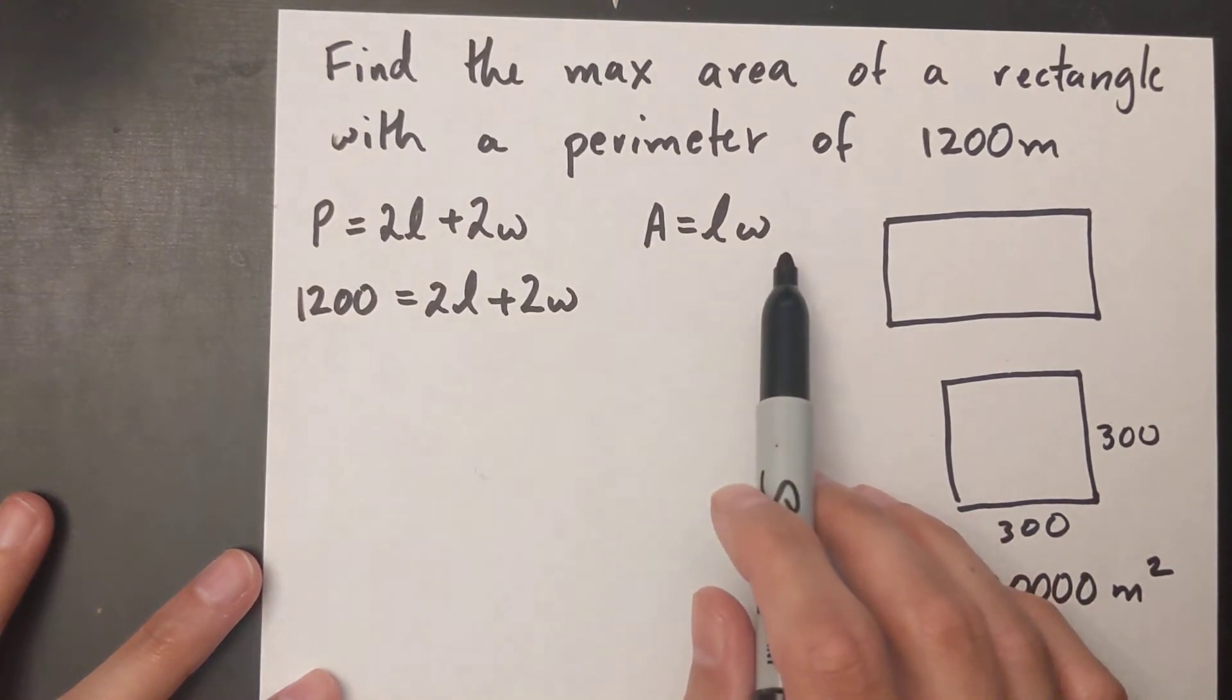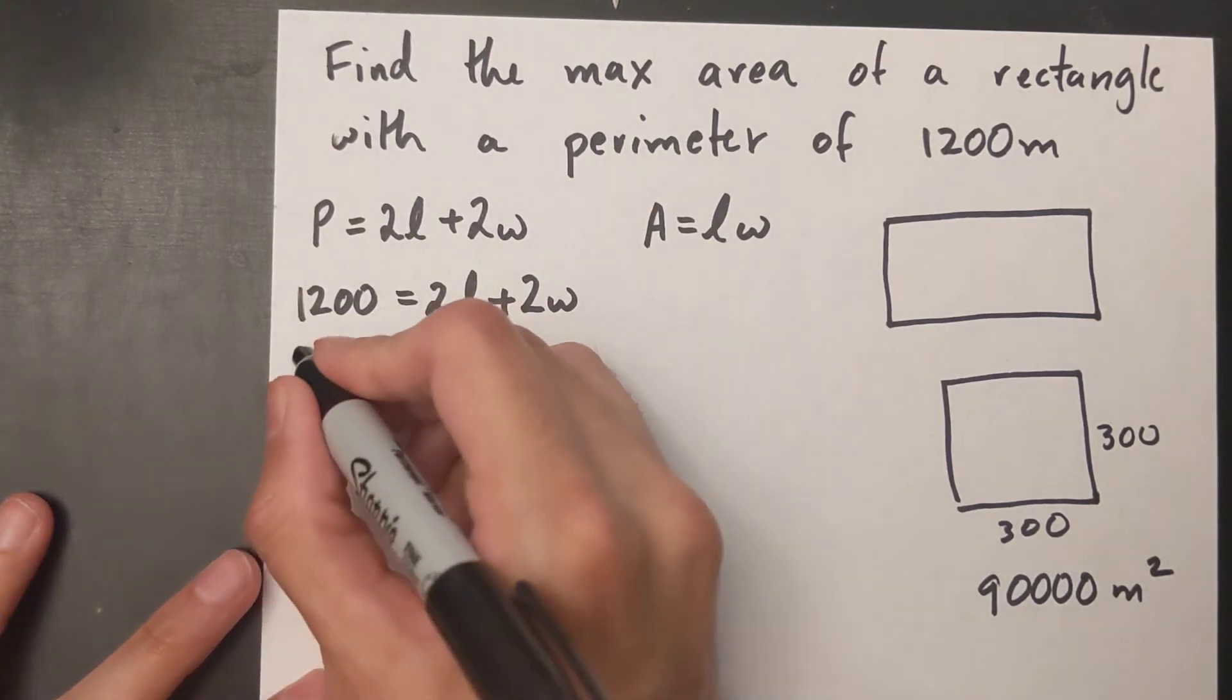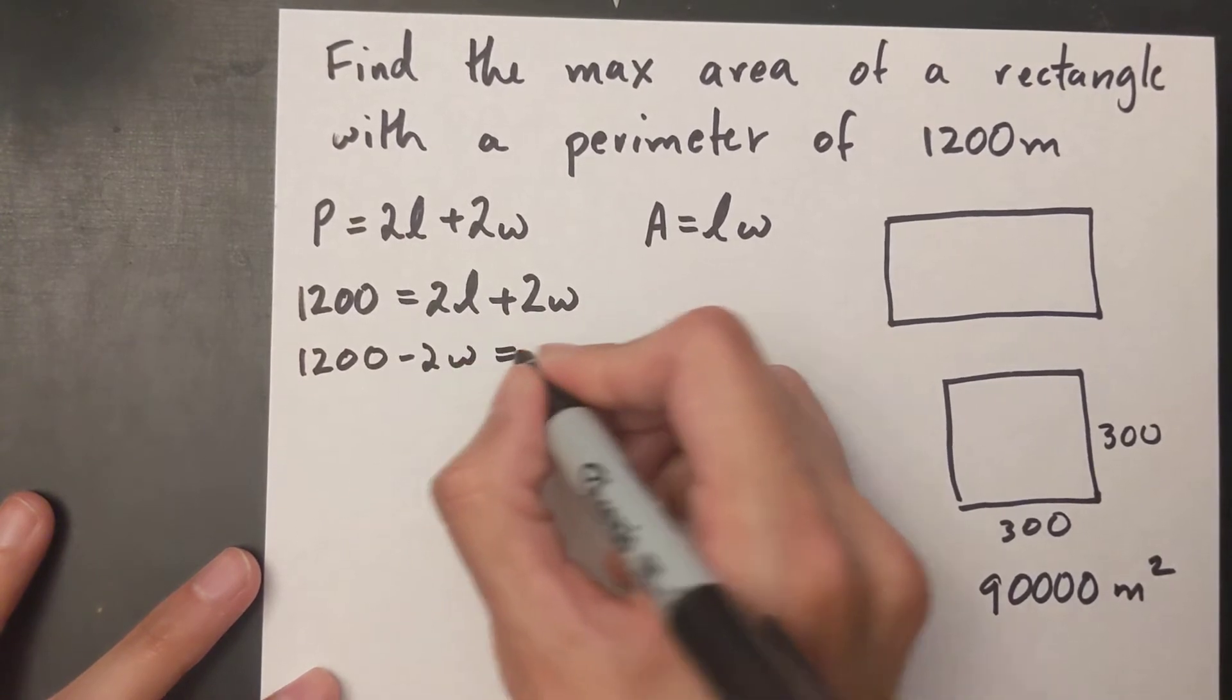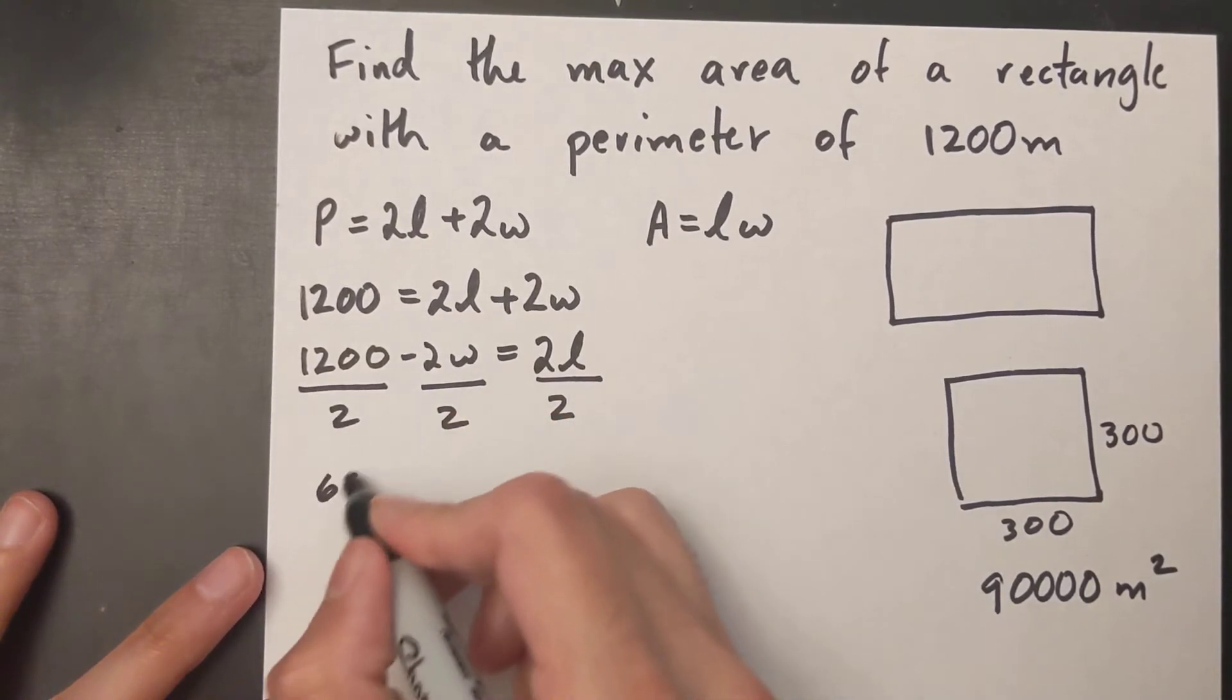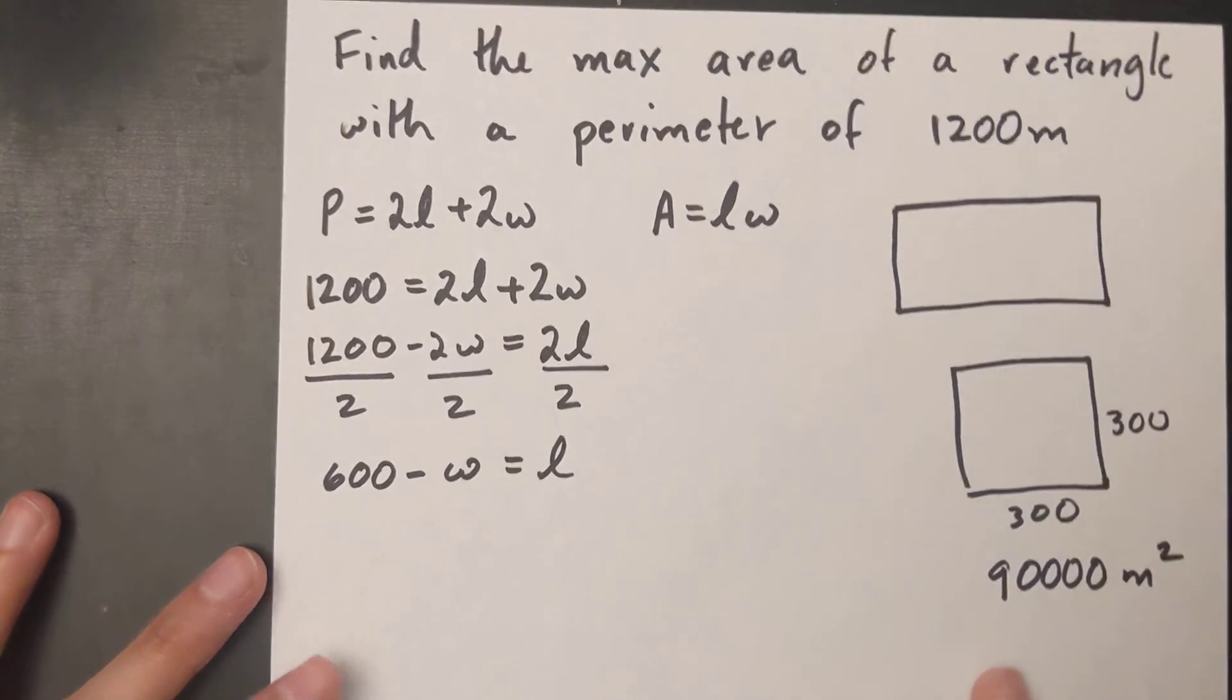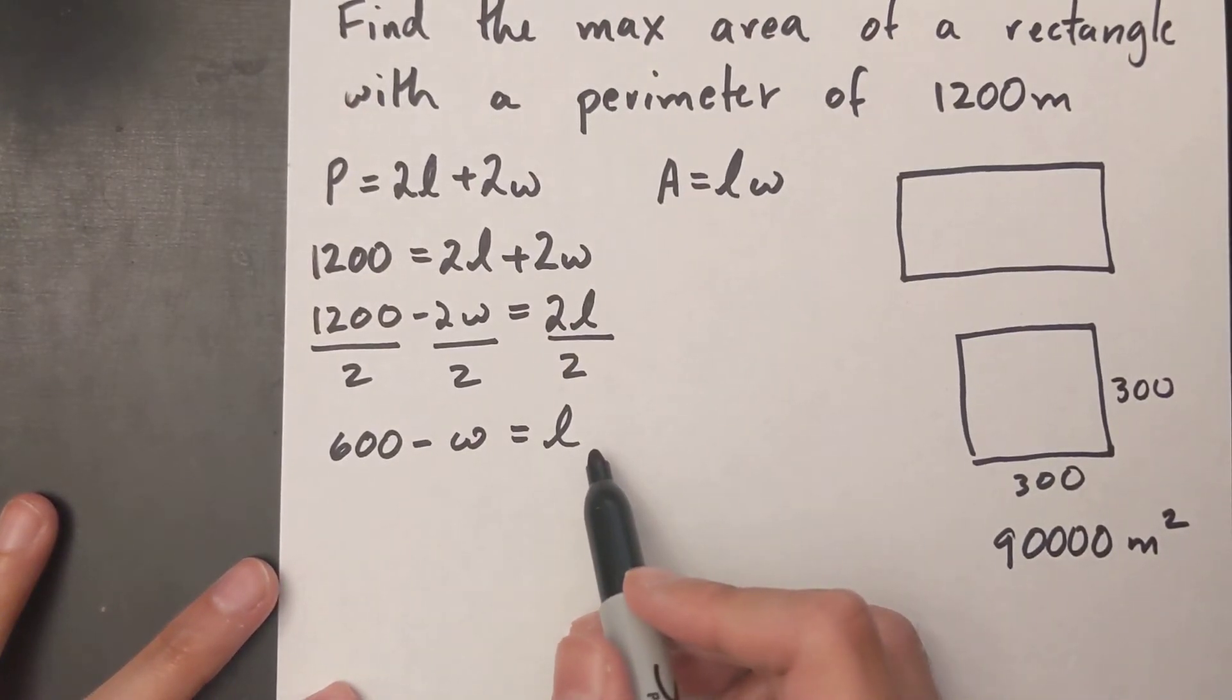I'm going to isolate my length. I'm going to move the 2W to the other side. I'm going to divide everything by 2, so 600 minus W is going to be my length.